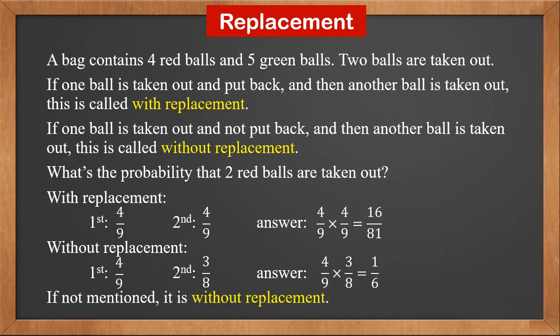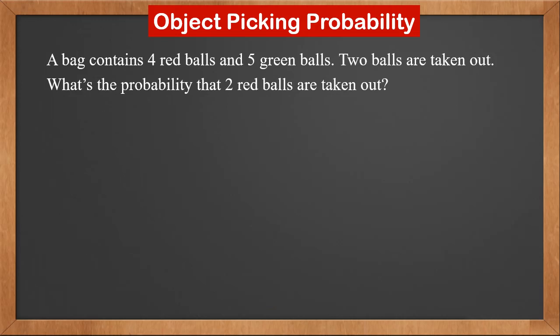If not mentioned, it is without replacement. Let's look at the problem again. A bag contains four red balls and five green balls. Two balls are taken out. What's the probability that two red balls are taken out? For the first ball, the probability of red is four over nine. For the second ball, the probability of red is three over eight. So the answer is the product of these two, which is one over six.